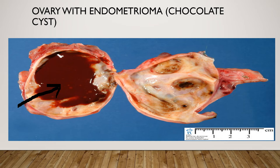An endometrioma occurs when endometriotic tissue is found inside the ovary. This endometrial tissue undergoes cyclical changes under the influence of estrogen and progesterone, and it bleeds. The collection of blood forms a brownish-reddish material similar to chocolate in color — hence it is called a chocolate cyst. In this picture, we can see an ovary removed by oophorectomy and cut in half, with the area marked by the black arrow showing this brownish-reddish material.